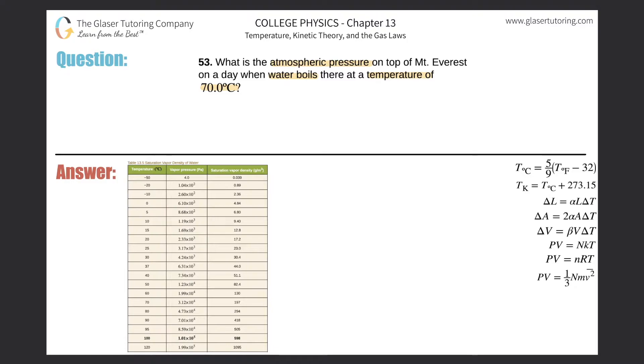Alright. So basically, if we know the boiling point of water or the temperature at which water boils at, in this problem they're telling us it's boiling at 70 degrees Celsius. That also means we will know what the atmospheric pressure is at that particular point. At that particular altitude in this problem, we're talking about the top of Mount Everest.